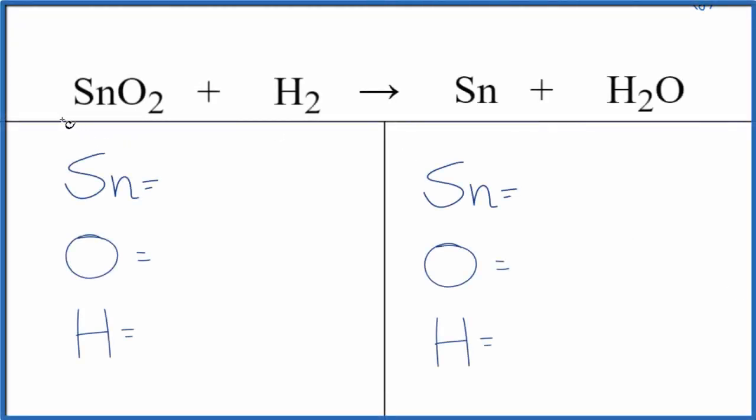Let's balance the equation for SnO2 plus H2 gives us Sn plus H2O. We have tin oxide, we have hydrogen gas, and we end up with tin metal and water.